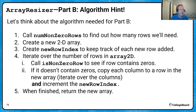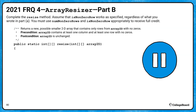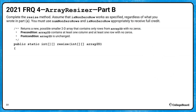Now that we've gone through the algorithm, go ahead and pause here — take about 10 to 12 minutes — and try to write part B of the resize method. You're going to take in array2D and return a new 2D array that is possibly smaller and contains only non-zero rows.